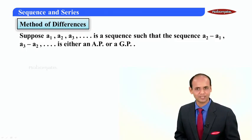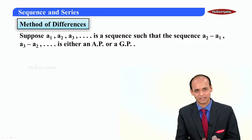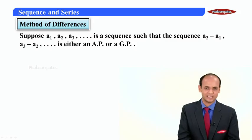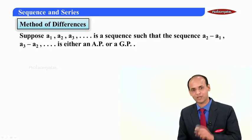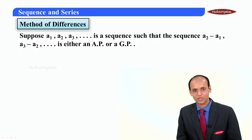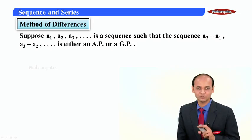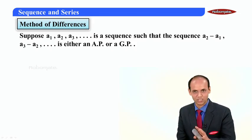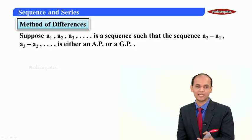In the method of difference, let us say I am given a sequence a1, a2, a3 till an. This sequence does not look like an AP, GP, or AGP, and we have to find the sum of the sequence. Now, if we are able to find the nth term, we can use the summation concept. What we observe is that the difference between consecutive terms is forming an AP or GP. The given sequence is not an AP or GP, but the difference between the consecutive terms is forming an AP or GP.